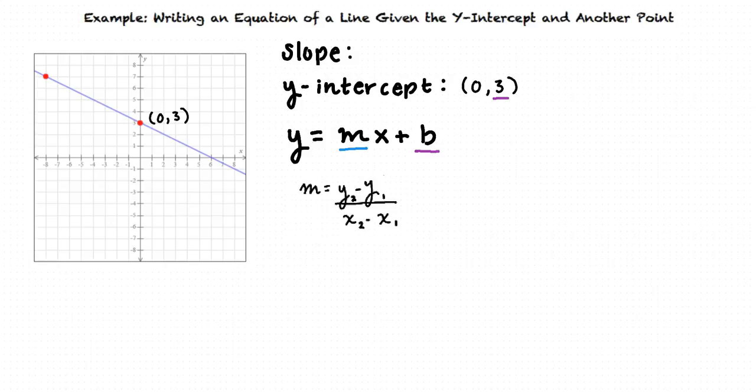We have already established that the y-intercept is (0,3). So let's use that coordinate as our first point. We will need to identify another point on the graph to use this formula. We can see that there is another point marked on the graph already at (-8,1). Let's use this as our second point.